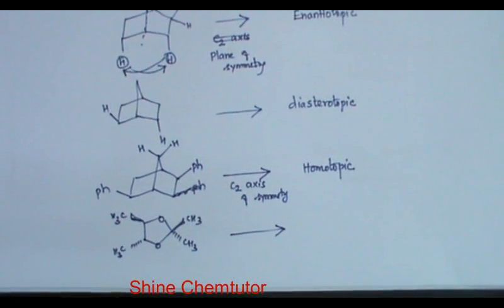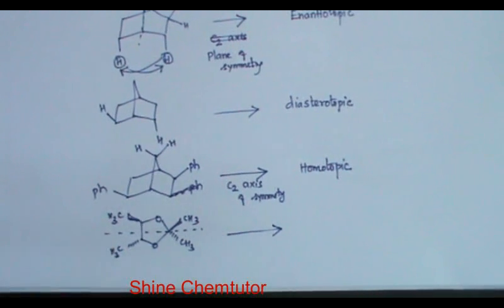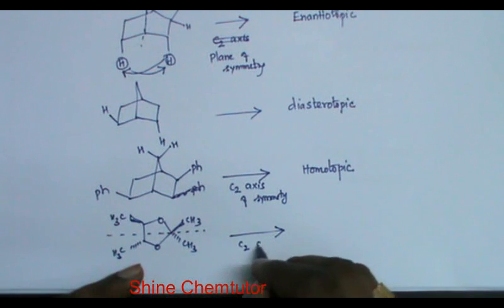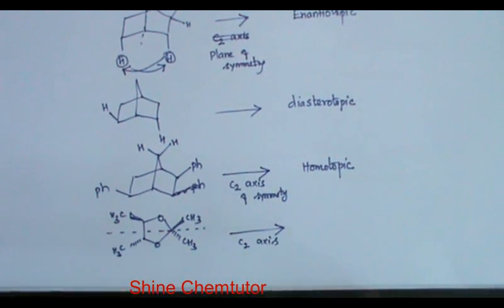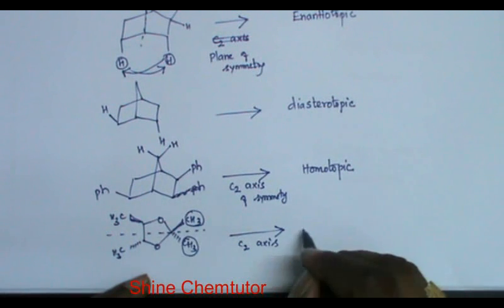Look at this molecule. Through this axis, I can rotate by 180 degrees to get the same structure. So because of that, it has a C2 axis of symmetry, and these two methyl groups are homotopic.